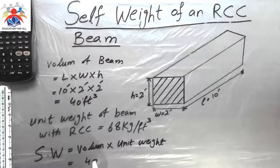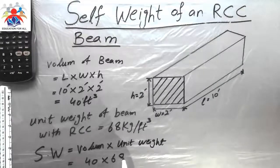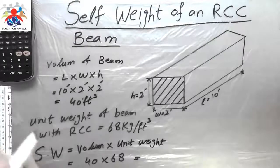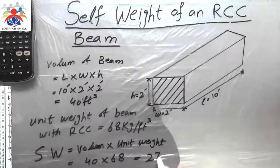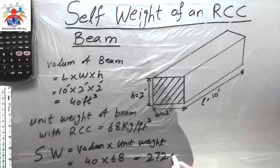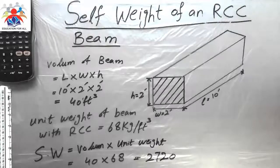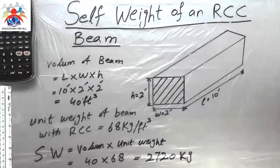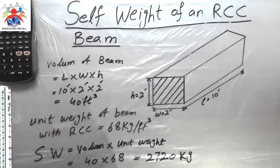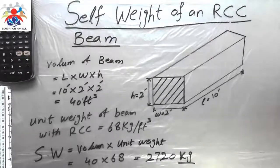So it would be forty multiply by sixty eight. The answer we will get is two thousand seven hundred and twenty kilograms.